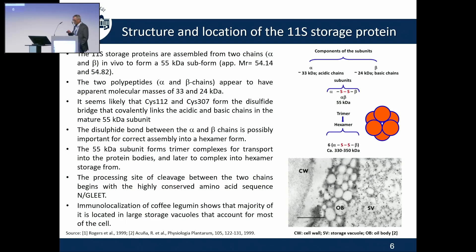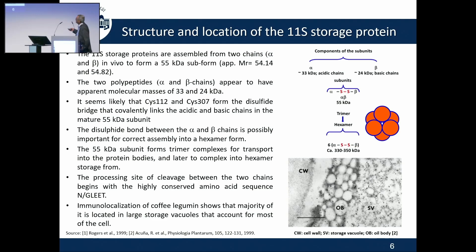That's my field. The 11S proteins are assembled from two chains: alpha-acidic chains and beta-acidic chains, differentiated by molecular weight. They are bound together by a disulfide bridge and formed into monomers, which combine into a trimer, and altogether form a hexamer with a globular structure. The two cysteines form this disulfide bridge. Using immunolocalization of the coffee legumin, you find they are located in the large storage vacuoles that account for most of the cells.